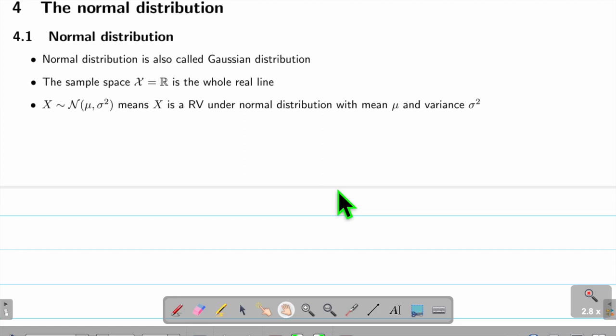We now talk about normal distribution. Normal distribution is also called Gaussian distribution. The sample space of this random variable is the whole real line, so it can take any number. We write X ~ N(μ, σ²), which means X is a random variable under normal distribution with mean μ and variance σ².